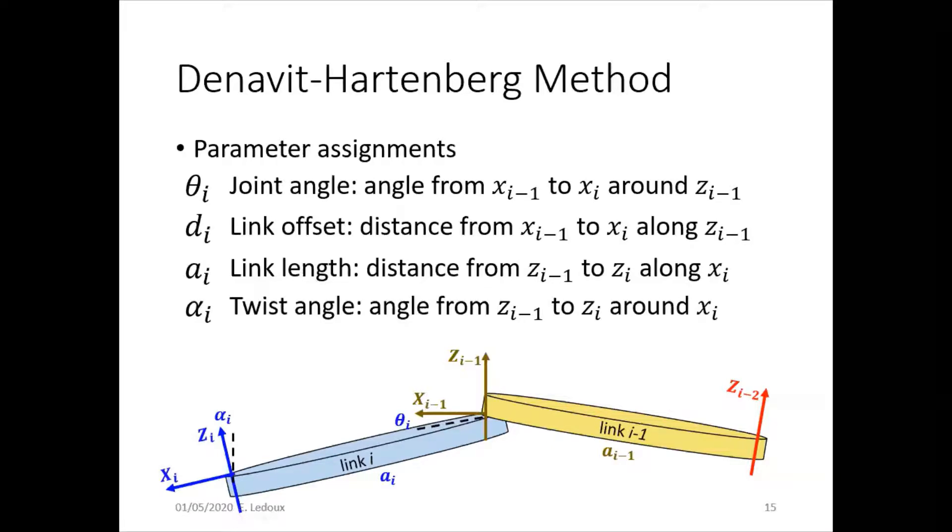And finally, the twist angle is the angle between the Z axes. Now, since all of these Z axes kind of point up, you can see that the joints each rotate around parallel axes. Then there is no twist angle here. But if one of the joint axes pointed into the page or out of the page, then we would have a twist angle.